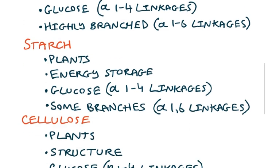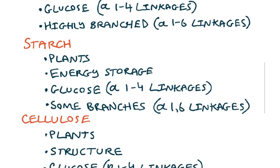In plants, their analog to glycogen in animals is starch. It's also going to be energy storage. It's also going to use the same linkages for when it's straight and when it's branched. The only difference is that it doesn't branch as frequently as glycogen.